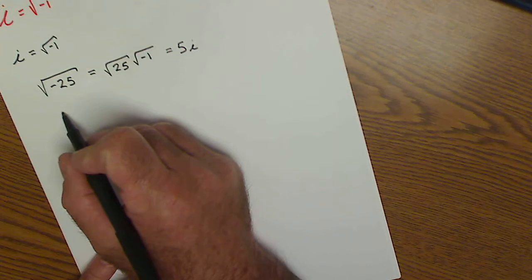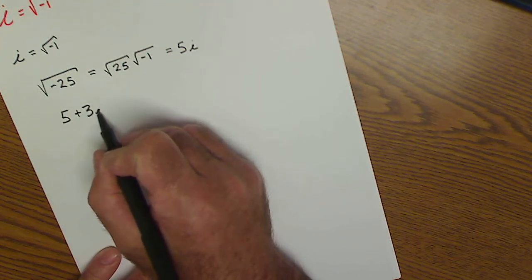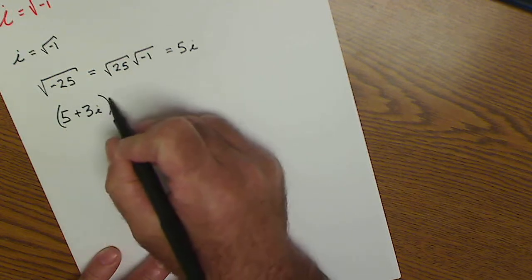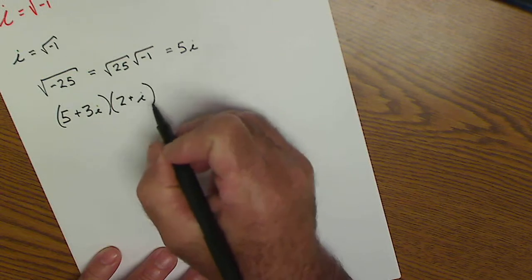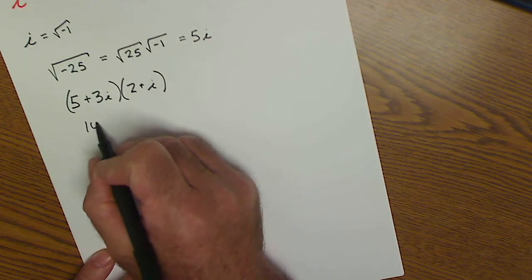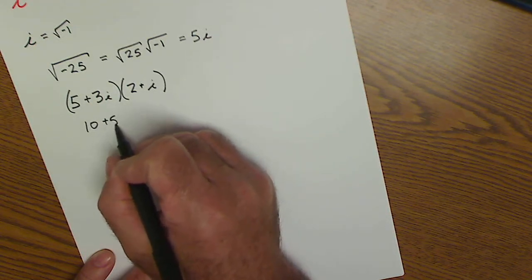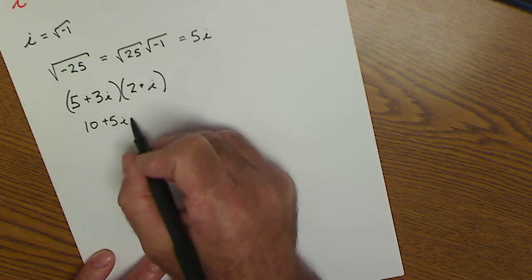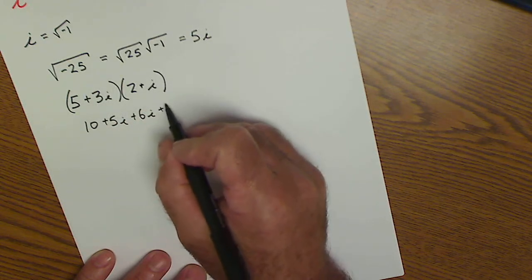Here's another problem that's kind of common. Let's say I have 5 plus 3i times another 2 plus i. I'm going to FOIL out that quantity. First term would be 10, first outer would be 5i, inner would be 6i, and last would be 3i squared.